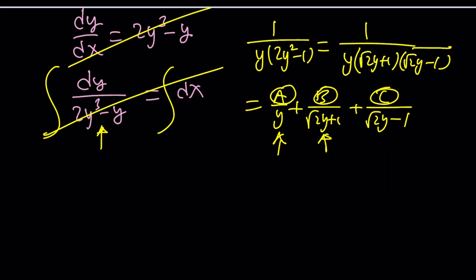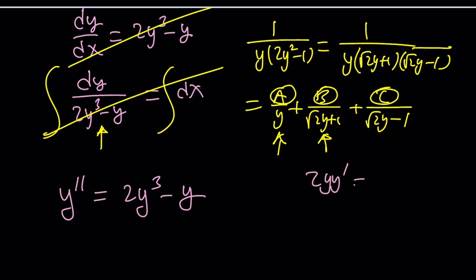Let me write it one more time: y double prime equals 2y cubed minus y. There's a very critical step here. The method depends on getting something that is easily integrable — we want to get something that is the derivative of something. For example, if we had 2y·y prime, that would be the derivative of y squared. But we have y double prime, not 2y·y prime — very different. We can get there though.